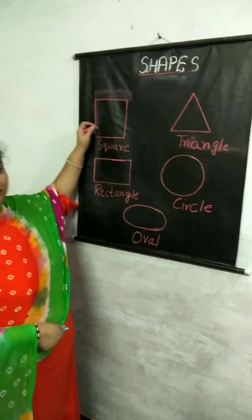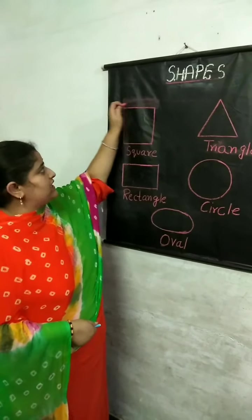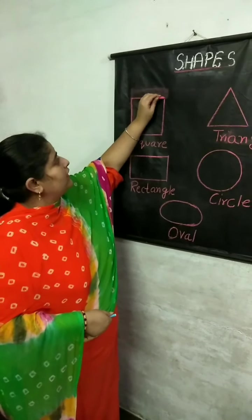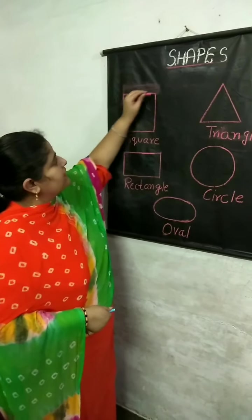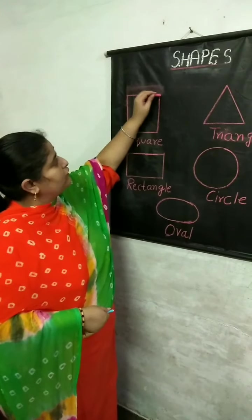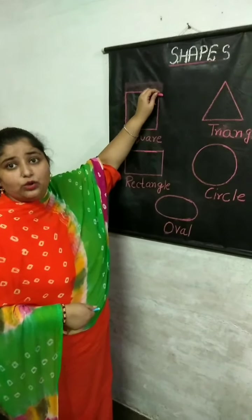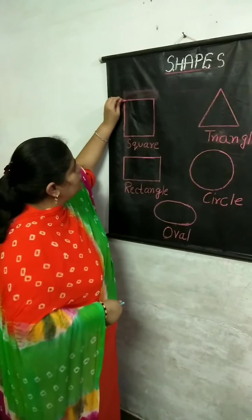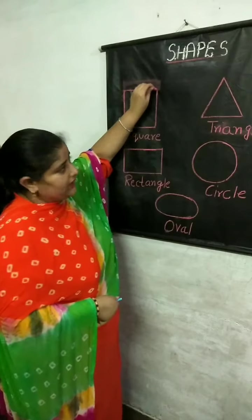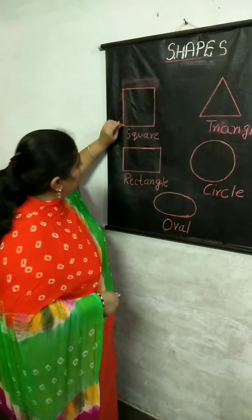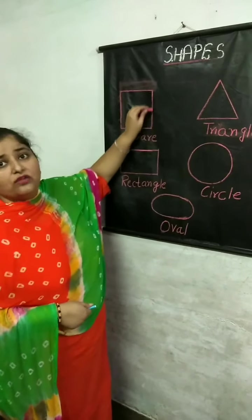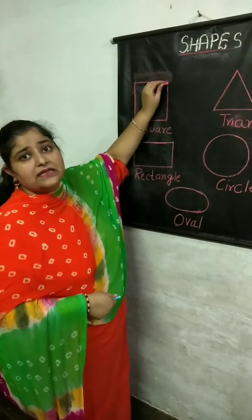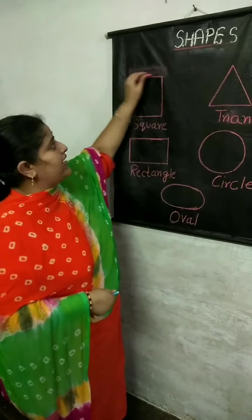The first shape is a square. A square is formed with four lines and all four lines are equal. There are four corners. A square is of equal length and breadth — all the sides are equal.